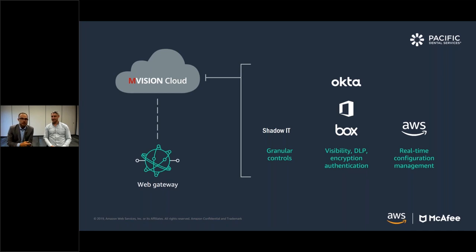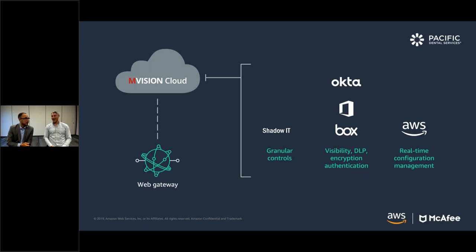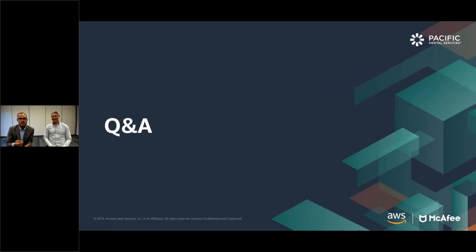We're able to see Tor activity, users uploading or downloading more data than a set threshold — say two gigabytes. We can set granular controls to know what each user is doing and establish a baseline, because marketing is not going to act the same as human resources. Those activity differences give us context and actual data value to identify anomalies and avoid false positive overload. Real-time configuration management, visibility to DLP, encryption, data at rest, and data in motion — that's important to everyone. And with that, we'll open it up for Q&A.